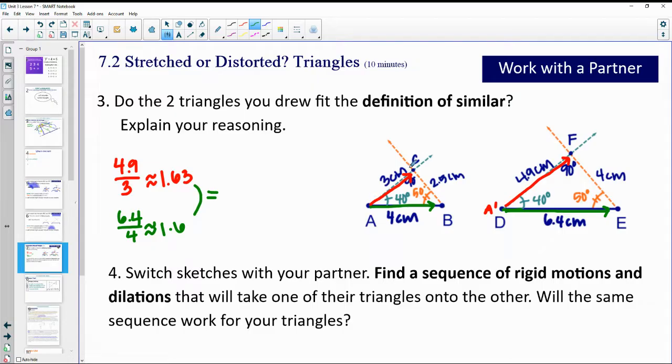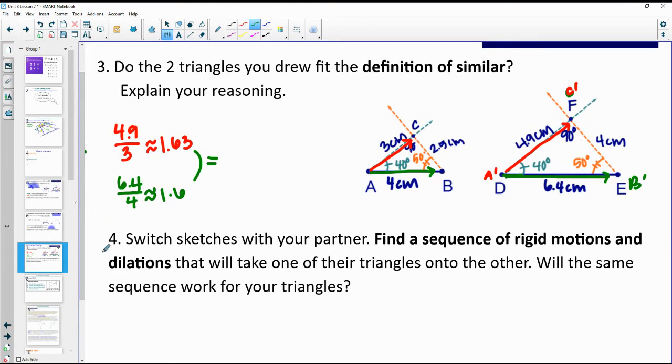So when I stretch this side out, C prime will land on F is what we found out there. And when I stretch out B at the same rate as this one, then B prime landed on here. So that does appear that they are similar.